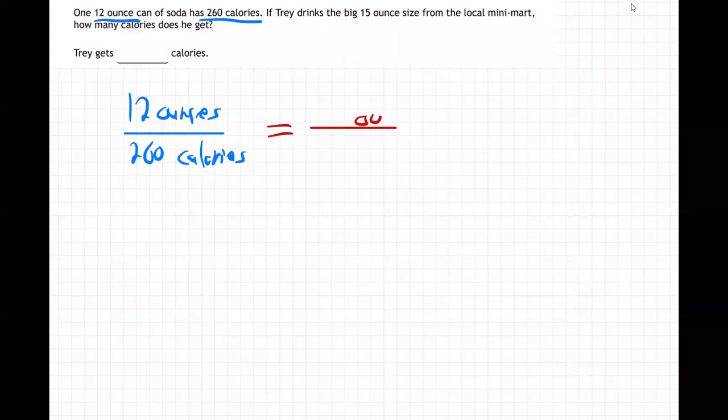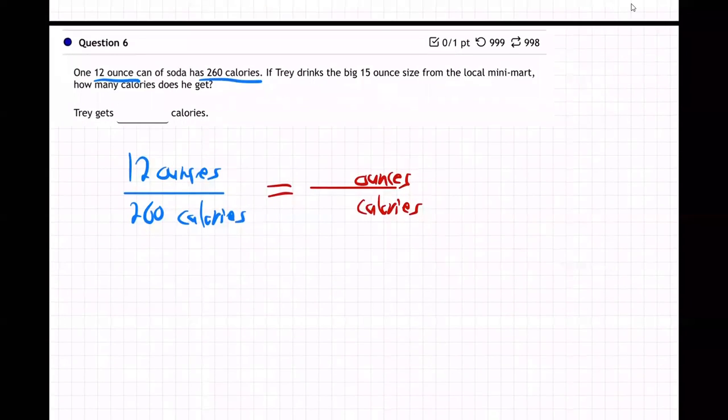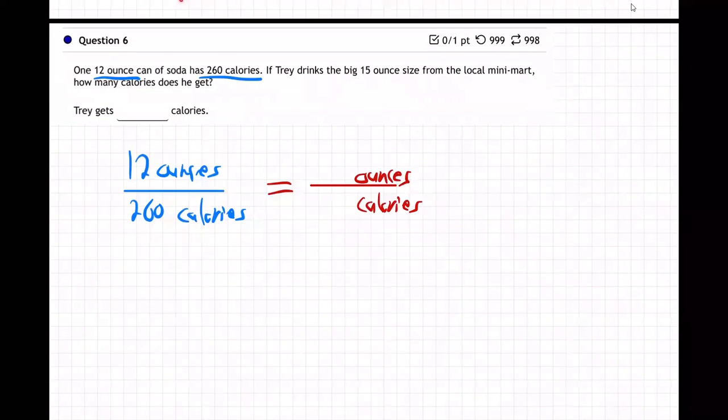So I'm going to put ounces on top and then calories on the bottom. Since I did ounces on top here, I gotta do the same thing. Just be consistent. Doesn't matter which is top or bottom, just make them the same.